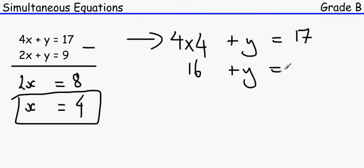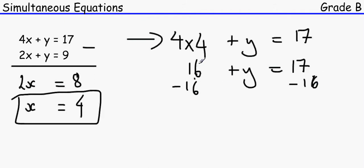The general rule in algebra is to keep numbers on one side and letters on the other. So we move 16 across by subtracting 16 from both sides, giving y equals 1. We now have x equals 4 and y equals 1.